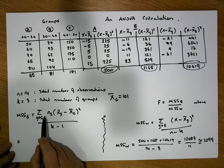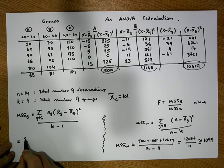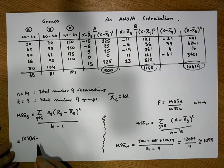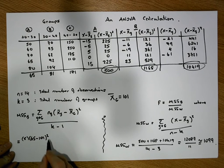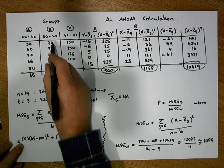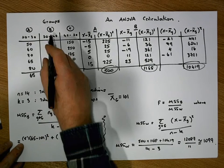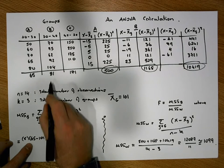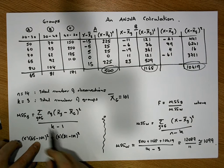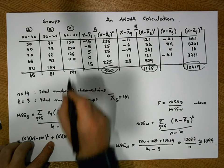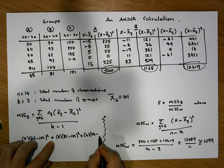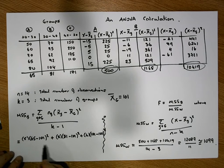The mean sum of squares value is going to be equal to the first sample size, which is five, times the first mean which is 65, minus the global mean which is 101, and that needs to be squared. We do this for all groups and add them up: plus the next sample size of five times its group mean of 81 minus 101 squared, plus the next sample size of four times its mean of 171 minus 101 squared.